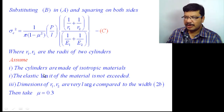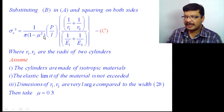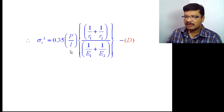Taking some assumptions — the cylinders are made of isotropic materials, the elastic limit of the metal is not exceeded, and dimensions of r1 and r2 are very large compared to the width 2b — then you can take Poisson's ratio as 0.3. If you substitute 0.3 into this equation, it simplifies further.